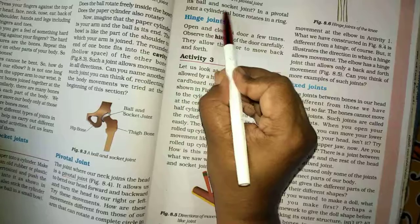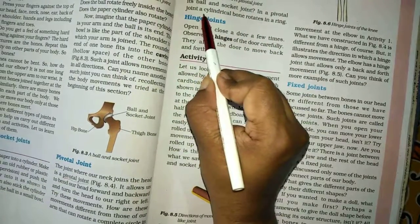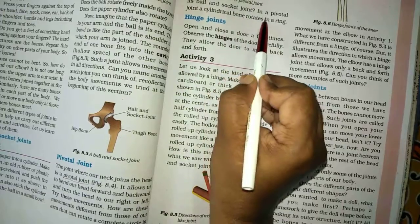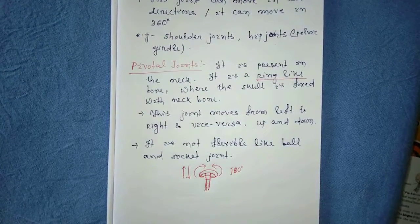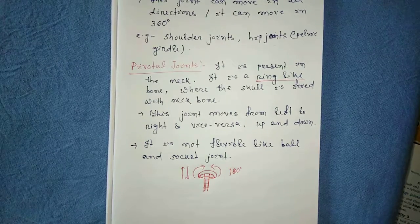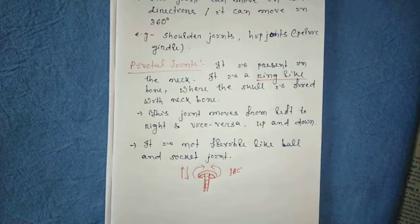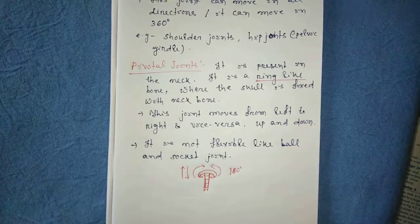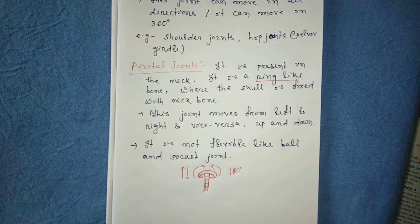In a pivotal joint, a cylindrical bone rotates on a ring. This is the second type of joint — the pivotal joint. The example is the neck joint, where the skull is fixed in the neck. Thank you friends for watching. In my next video I will discuss the hinge joint and fixed joints. Bye!